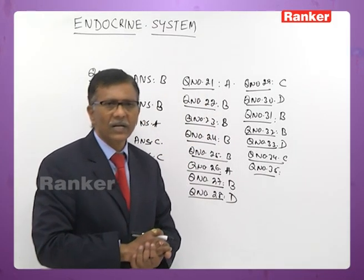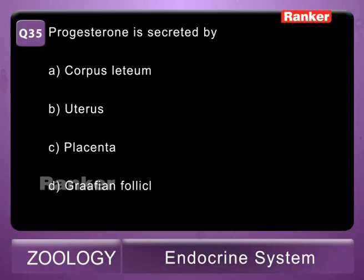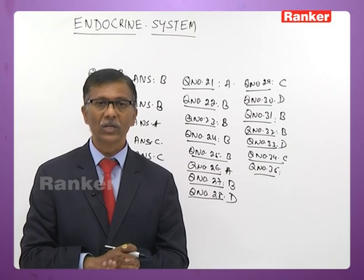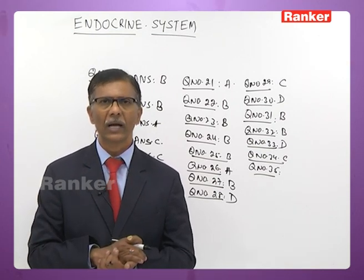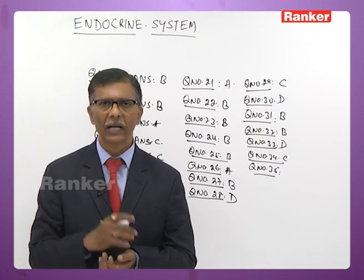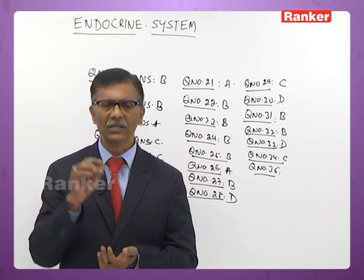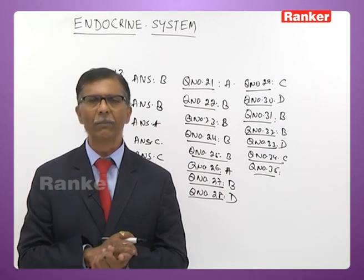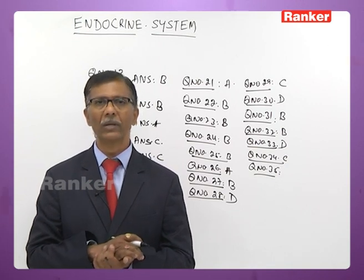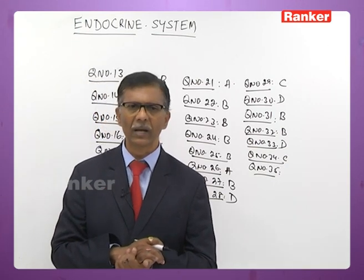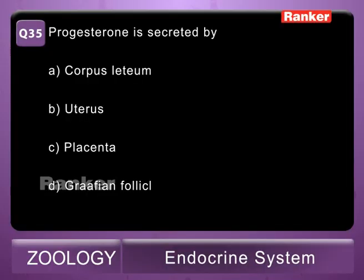Thirty-fifth question: progesterone is secreted by A - corpus luteum, B - uterus, C - placenta, D - Graafian follicle. Progesterone is secreted by the corpus luteum soon after ovulation. It is a pregnancy stabilizing hormone — it increases endometrial thickness, ensures implantation of the zygote, and has a protective influence on the fetus. The correct answer is A — corpus luteum.